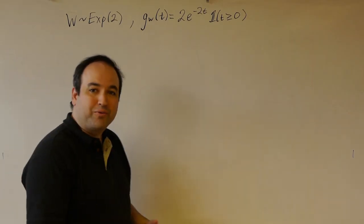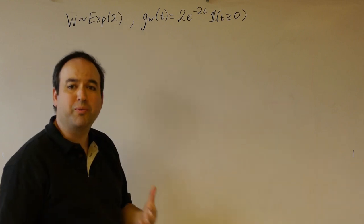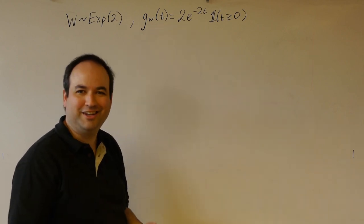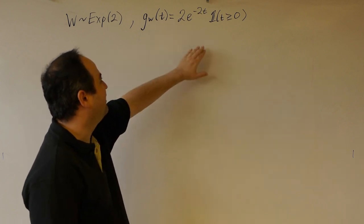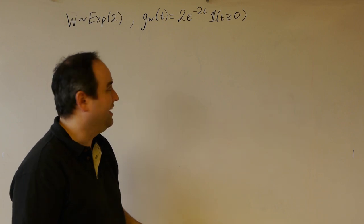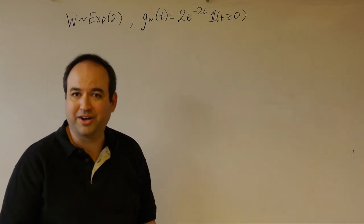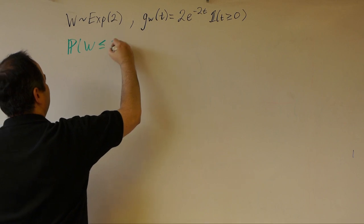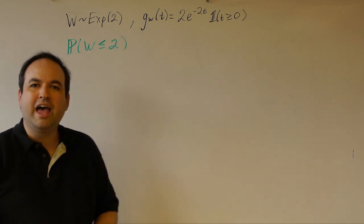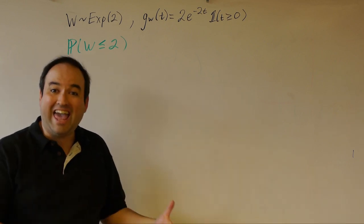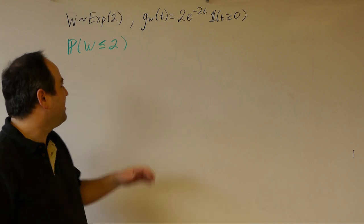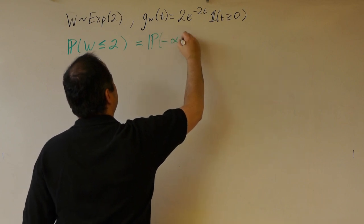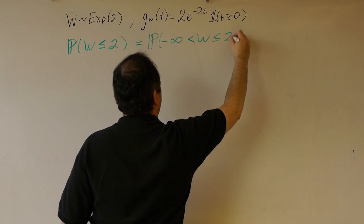Let's move on to another example. Suppose we have a random variable w that has an exponential distribution with rate parameter 2. That makes the density of w — I'll use a lowercase g for variety — so g of t is 2e to the minus 2t, at least as long as t is greater than or equal to zero. Suppose we want to find the probability that w is less than or equal to two. This doesn't quite have our a-less-than-random-variable-less-than-b setup, but we can think of w being less than or equal to two as the probability that negative infinity is less than w is less than or equal to two.